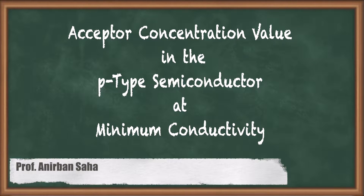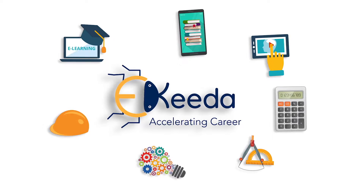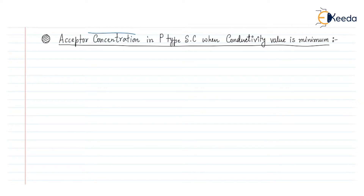Hello friends. In this video we are going to discuss the acceptor concentration in a p-type semiconductor when its conductivity value is minimum. To find the acceptor concentration in a p-type semiconductor when the conductivity value is minimum, the acceptor concentration is denoted by Na. This is what we need to find.